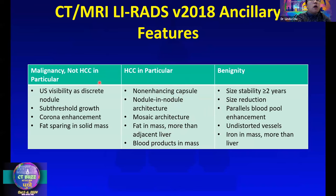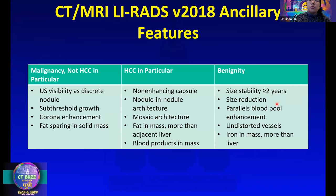There are other features suspicious for malignancy but not HCC specifically, including ultrasound visibility as a discrete nodule, interval growth not quite reaching the threshold, corona enhancement, and fat sparing in a solid mass. Signs of benignity include size stability, size reduction, enhancement paralleling the blood pool, undistorted vessels, and iron in the mass.